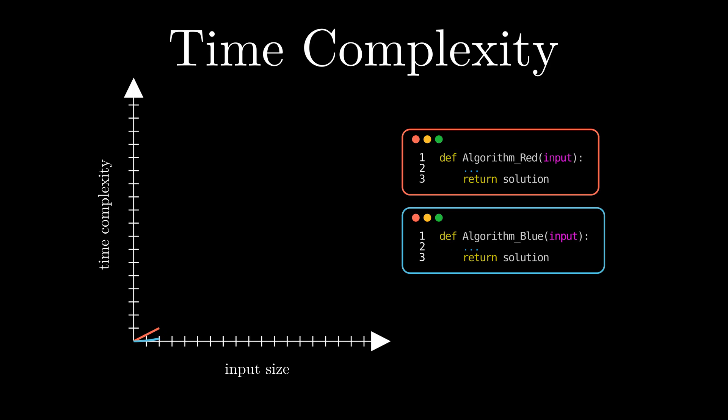However, what happens when we further increase the input size? Now it is algorithm red that performs better. We are usually interested in the asymptotic time complexity of an algorithm. Meaning, we want to compare the time complexity as the input size goes to infinity.